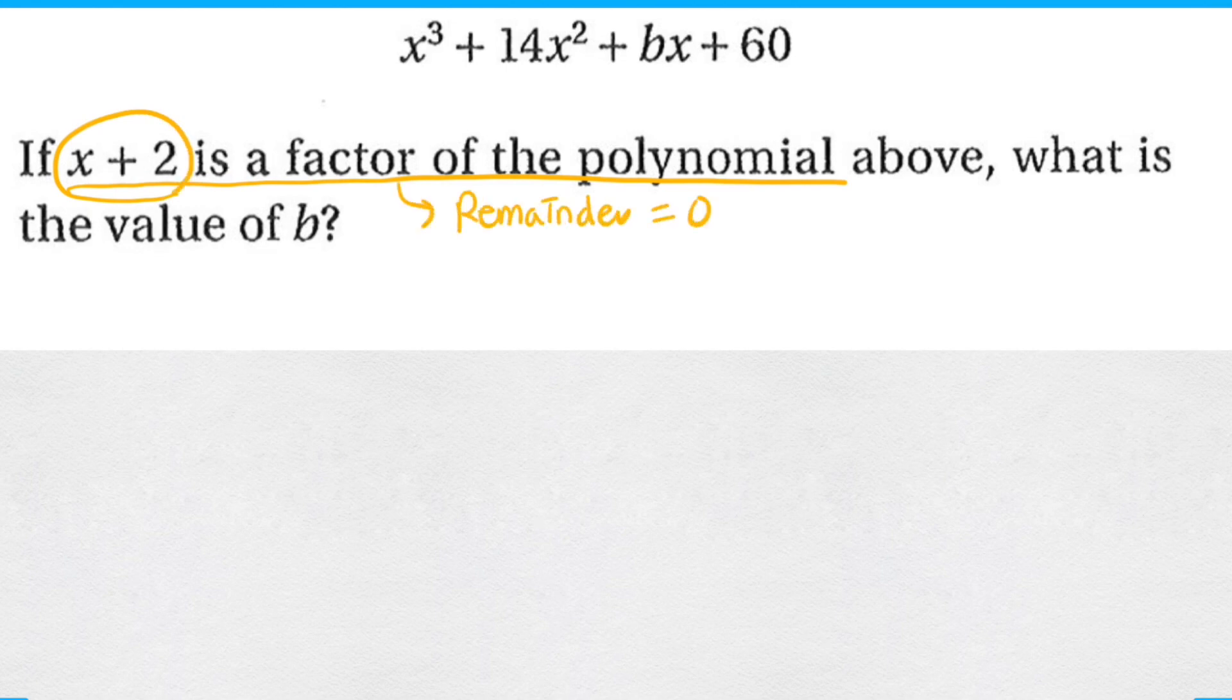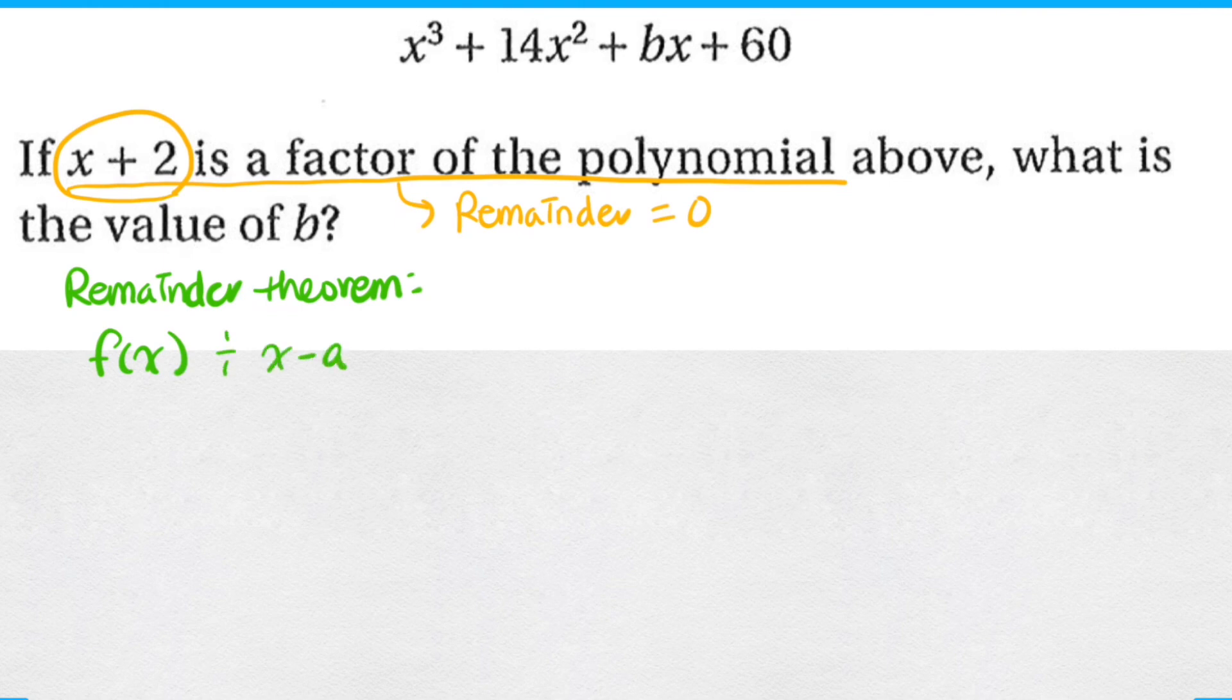Now knowing that, we can apply the remainder theorem here in order to find the value of b. So the remainder theorem states that when a polynomial f of x is divided by a linear polynomial, for instance x minus a, then f of a should be equivalent to the remainder.